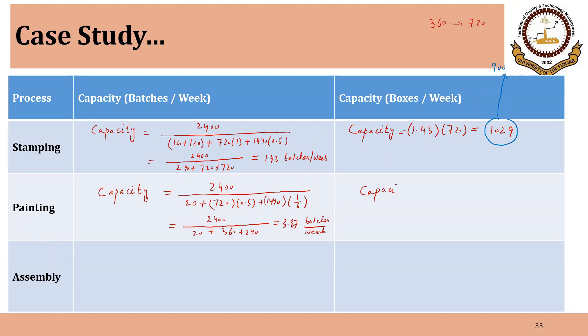And in terms of boxes per week, that will be equal to 3.87 is the number of batches and the batch size is 720. So that will be 2786 boxes per week. Now here this increase is even smaller. So it has increased from 2700 to 2786. So previously it was 2700, so increase is even smaller. So while the increase in painting is less as compared to stamping and the increase in both cases is not linear.